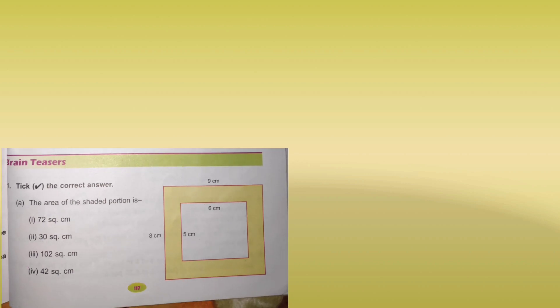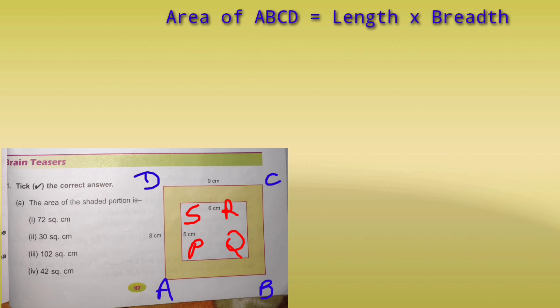A figure is given and the shaded portion — the yellow portion — is what we need to find. For clarity, I will mark the outer rectangle as ABCD and the inner rectangle as PQRS. Forget for a moment that the inner rectangle exists. The area of the outer rectangle ABCD is length multiplied by breadth: 9 multiplied by 8, which equals 72 cm².